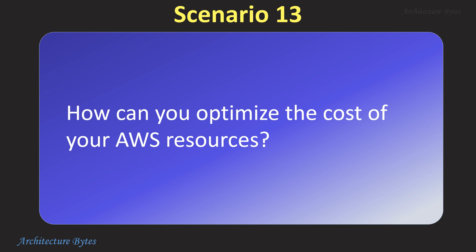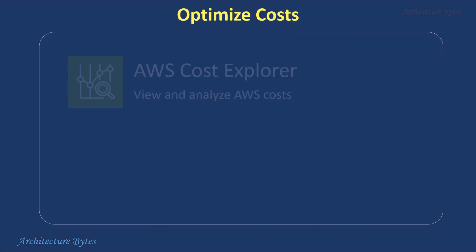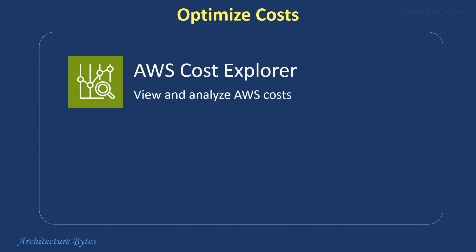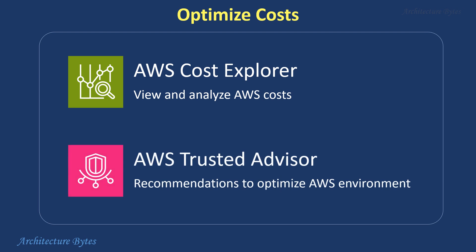How can you optimize the cost of your AWS resources? AWS Cost Explorer is a tool that allows you to view and analyze your AWS costs and usage in detail, identify cost drivers and gain insights to better manage and optimize your costs. AWS Trusted Advisor is a service that provides real-time recommendations to optimize your AWS environment across cost, performance, security, fault tolerance and service limits, following best practices.